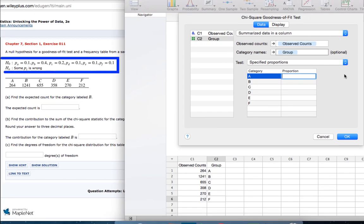For group A, p sub A was 0.1. For B, it was 0.4, 0.2, 0.1, 0.1, and 0.1.